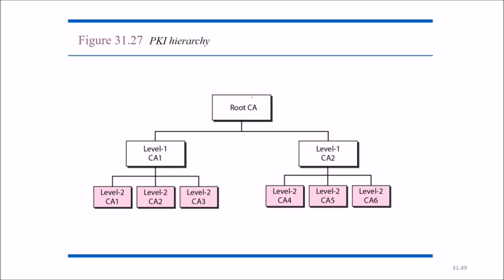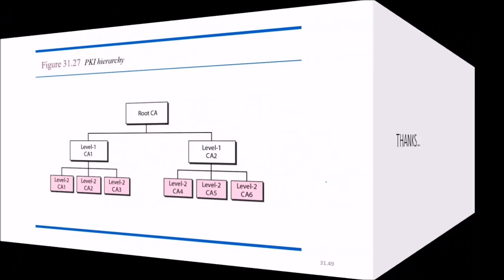PKI — Public Key Infrastructure hierarchy — has various levels. Just like certificates, different authorizations are given at different levels. A lower level asks level two, level two asks level one, and level one asks the root CA. Depending on the company size, you decide your PKI hierarchy. This is all about network security. Thank you.